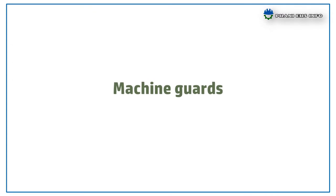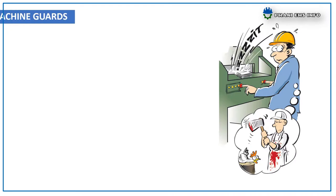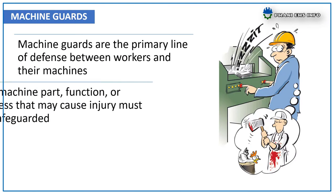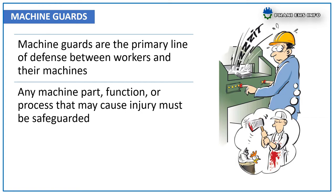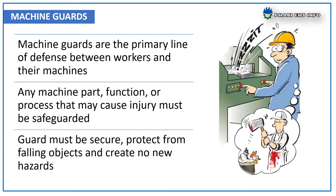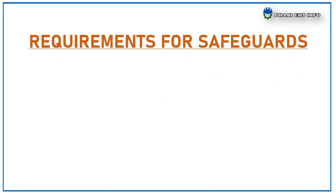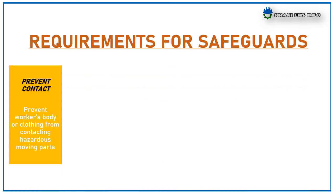The second control — engineering controls — means machine guards. Machine guards are the primary line of defense between workers and their machines. Any machine part, function, or process that may cause injury must be safeguarded. Guards must be secured, protect from falling objects, and create no new hazards. The first requirement for safeguards is to prevent contact — prevent workers' bodies or clothing from contacting hazardous moving parts.